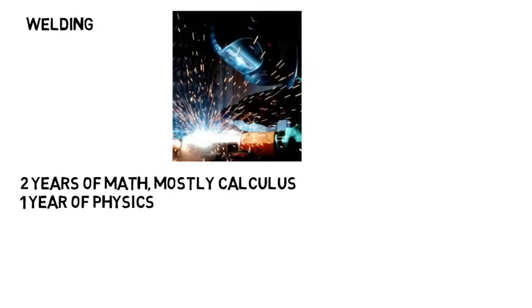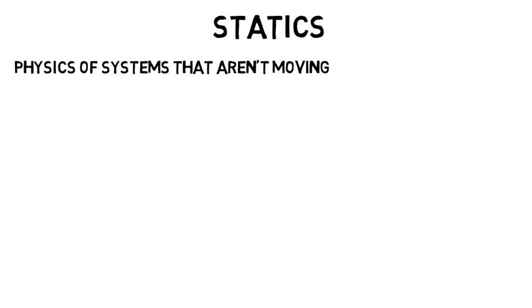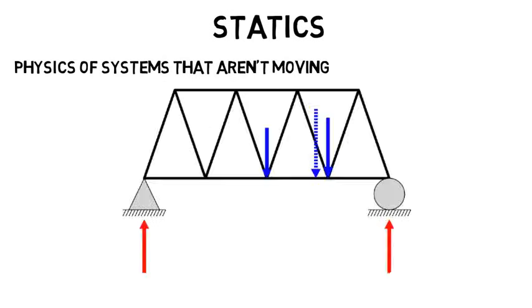The first main class of mechanical engineering would be statics, where you'll look at the physics of systems that aren't moving. This would be like looking at the forces and torques in something like a truss that holds up a bridge, where you'd have to analyze the forces that individual beams feel due to external forces.